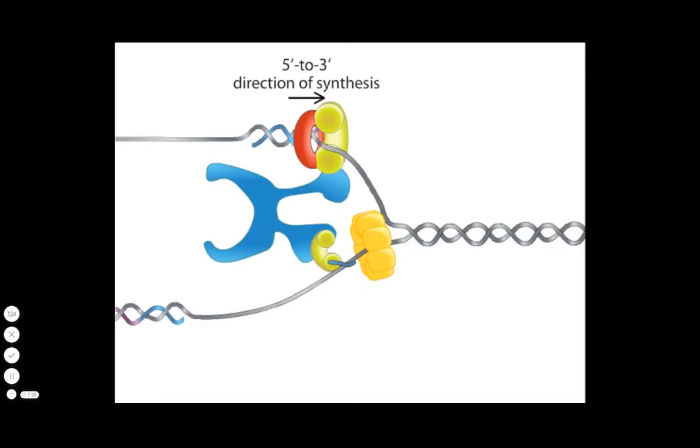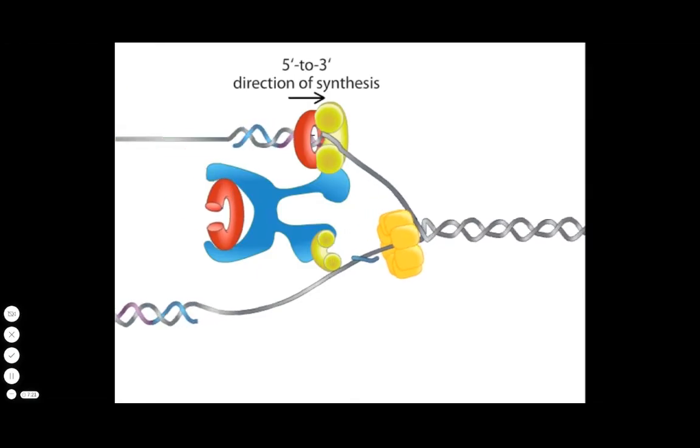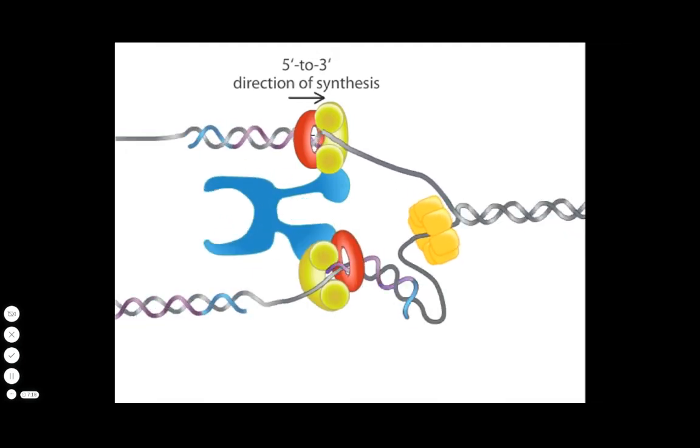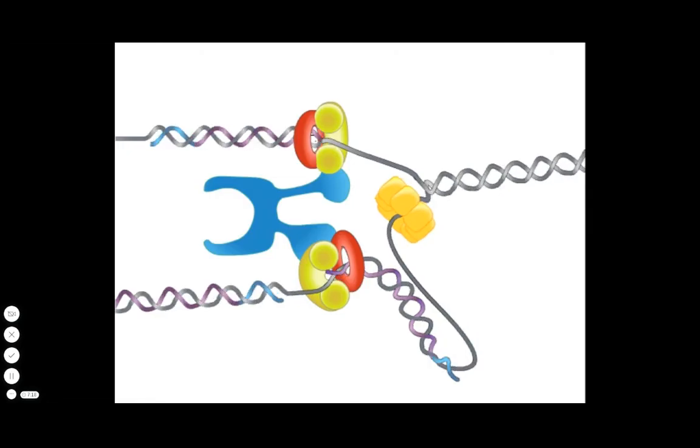Nucleotides with complementary bases to the template strand are added one by one in the 5' to 3' direction. The synthesis of DNA in the direction of the fork occurs continuously to the end of the template. This new strand is called the leading strand.